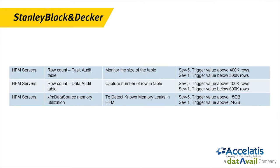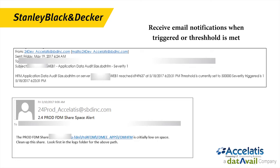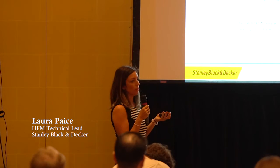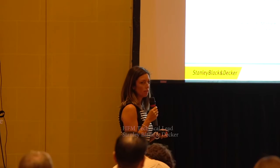If you look at an example on the bottom for HFM, we're tracking the task and data audit logs to make sure that those don't get too big. This slide shows an example of those triggers, or the emails that we get from Excelitus. Myself and some of the other admins will get an email saying that the audit log reached a certain threshold, we need to go in and archive it, and then we run through our process that does that.